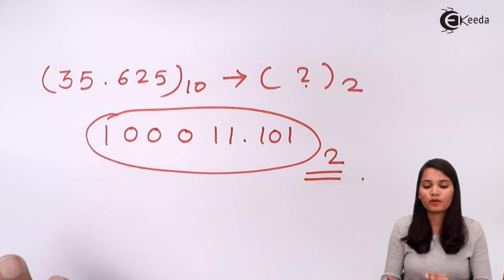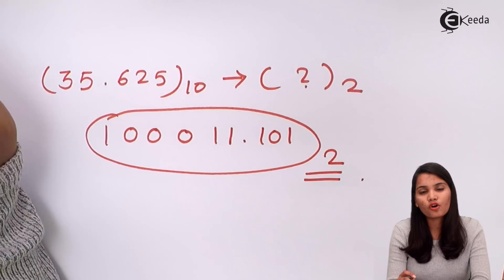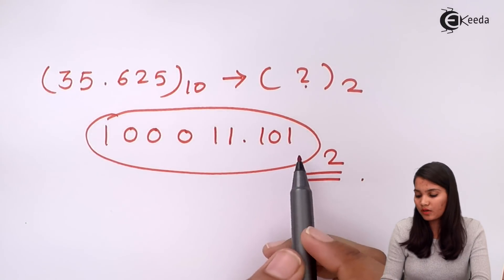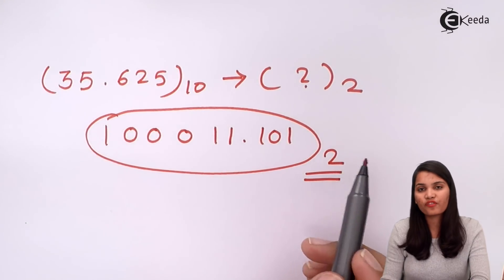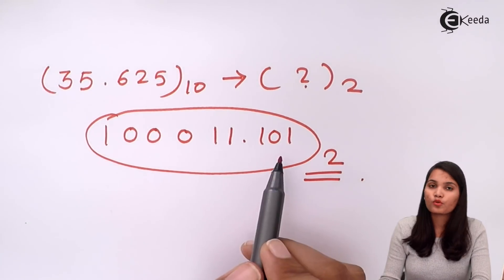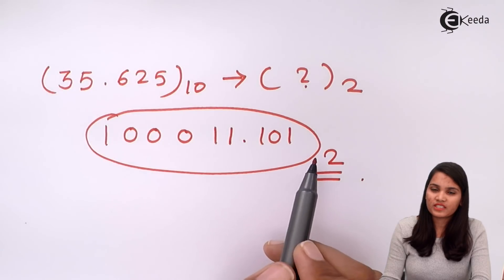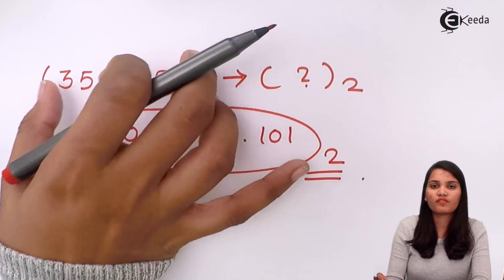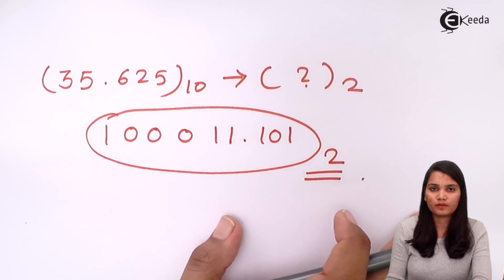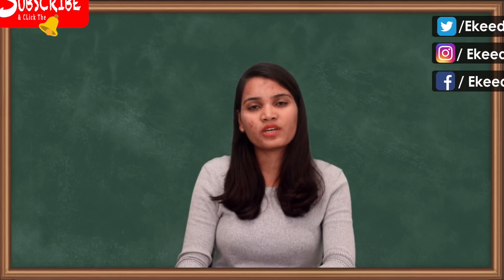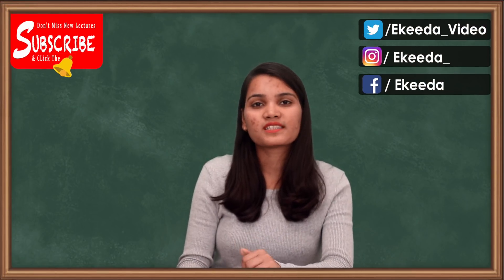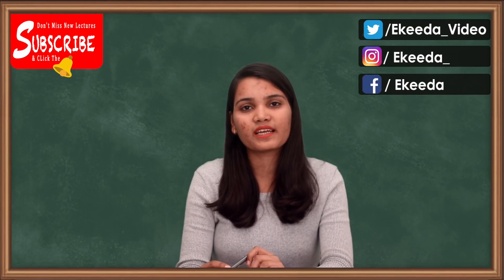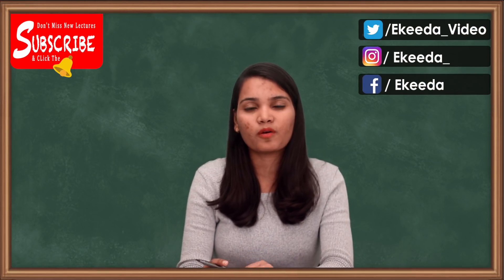Always remember: if you have an odd fractional number, go up to 4 or 5 digits — you will get the perfect binary representation of the given decimal number. Thank you for watching today's video. Stay tuned to the Ekeeda channel to get the latest updates from electronics.